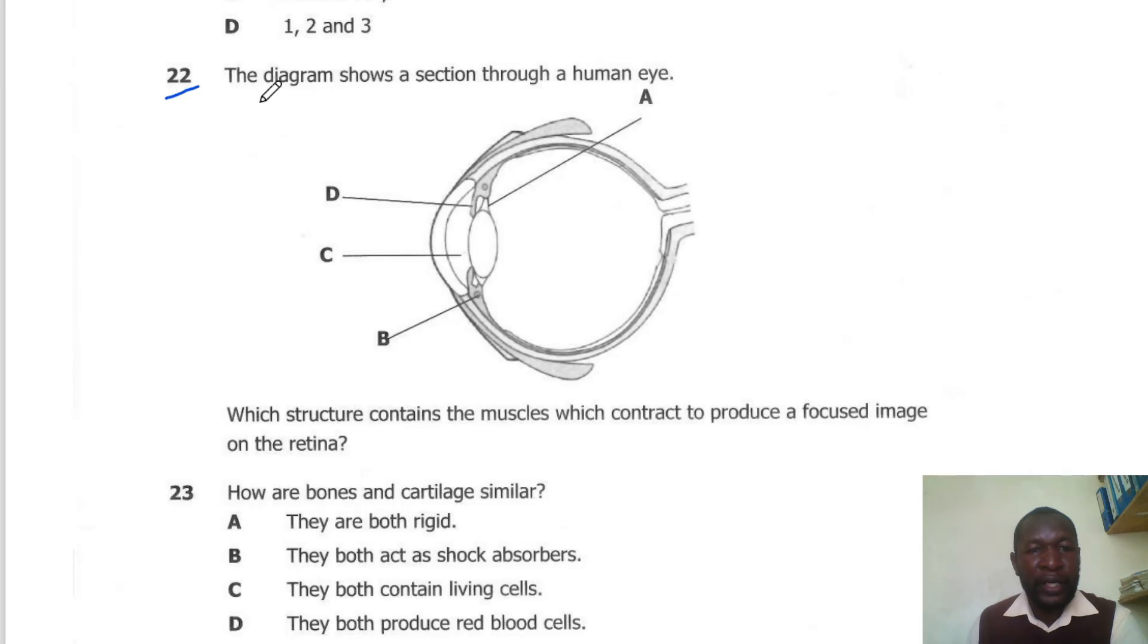Question 22. The diagram below shows a section through a human eye. Which structure contains muscles that contract to produce a focused image? The muscles will be the ciliary muscle, which is Part B.